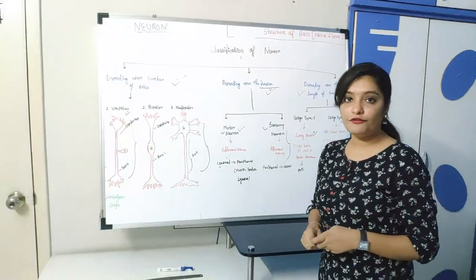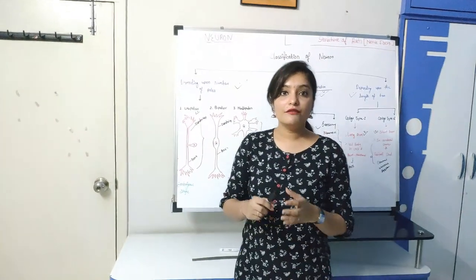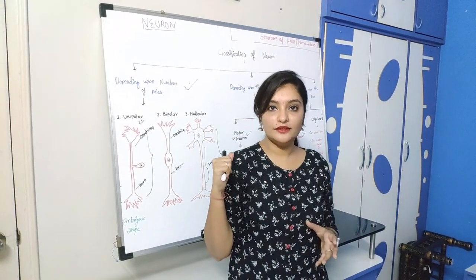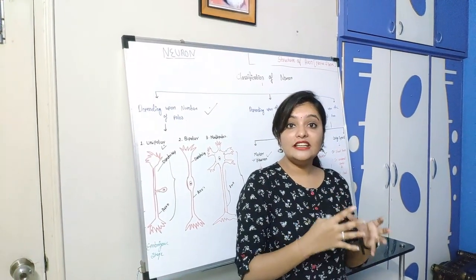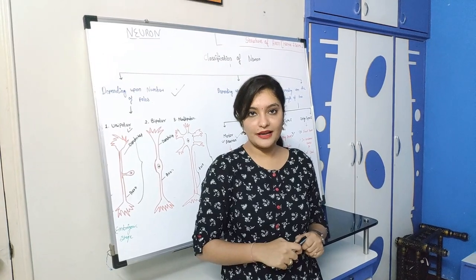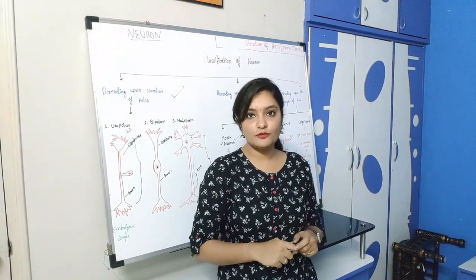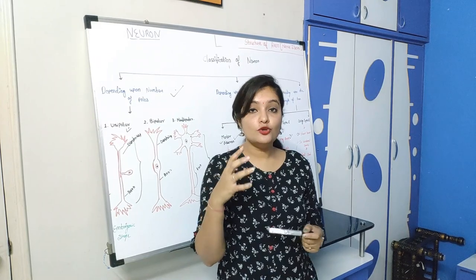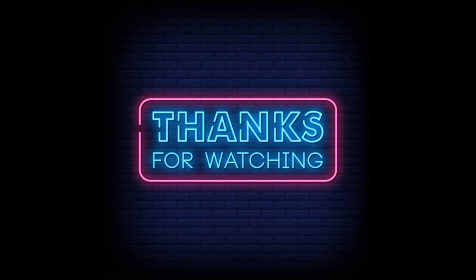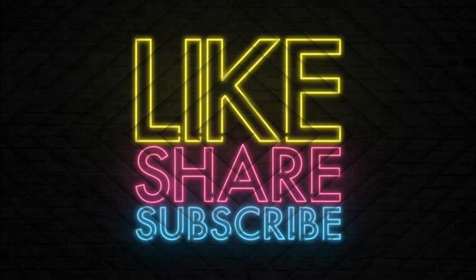So this is all about the basics of neuron. It is a very important chapter to know because the whole nervous system is totally based on this chapter. Even the injuries of nerves are also depending on the structure of the axon. I hope you understood my lecture. You can see all my previous lectures through the link below. Thank you very much and happy learning.